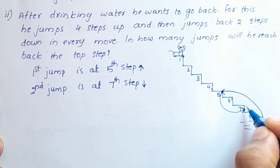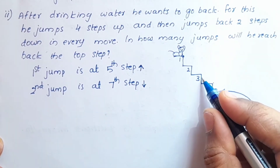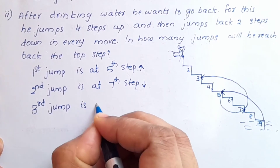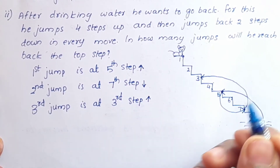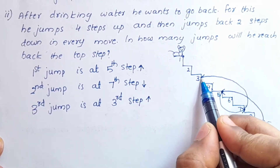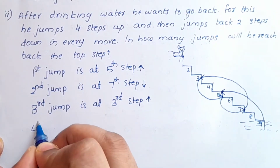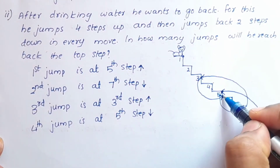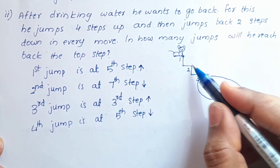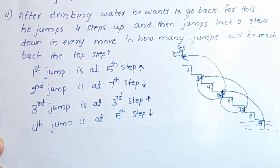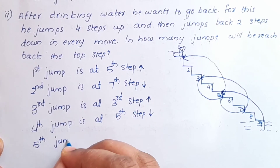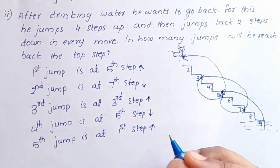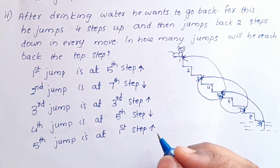The third jump: 4 steps up from the 5th step reaches the 1st step — but continuing the pattern, the third jump lands at the 3rd step. Then 2 steps down to the 5th step. The fourth jump goes 4 steps up again. The fifth jump reaches the 1st step, the topmost step.